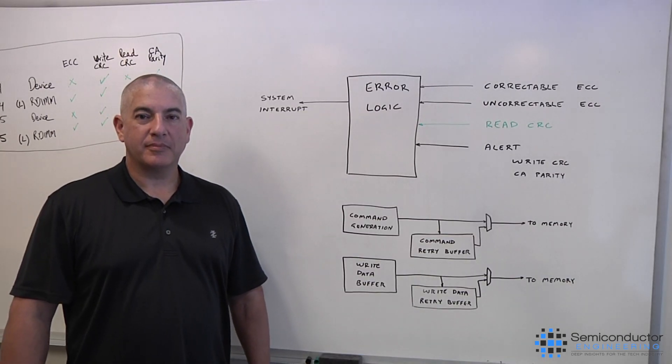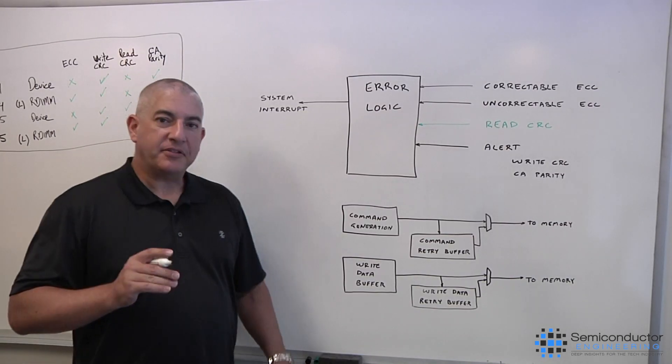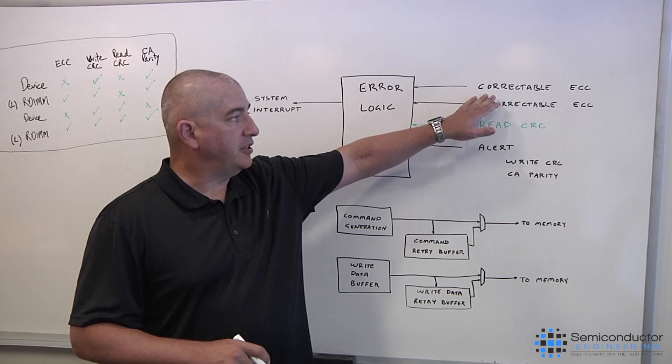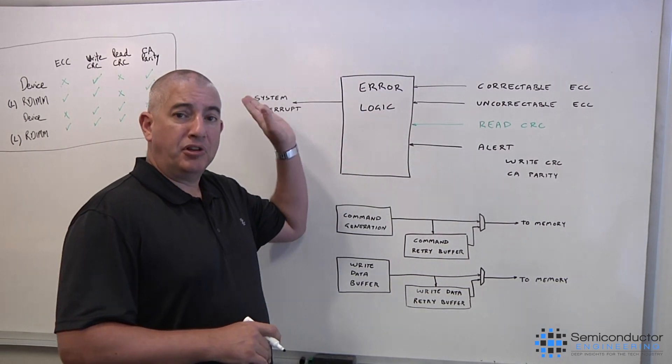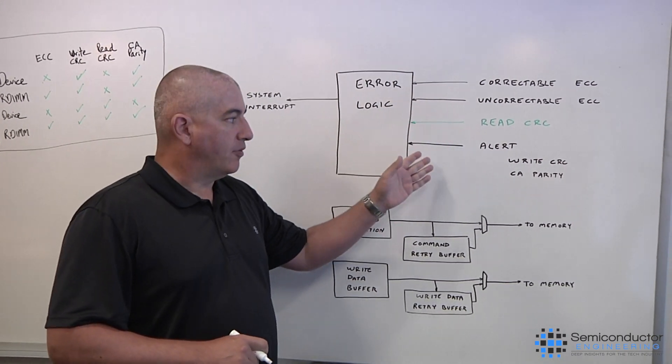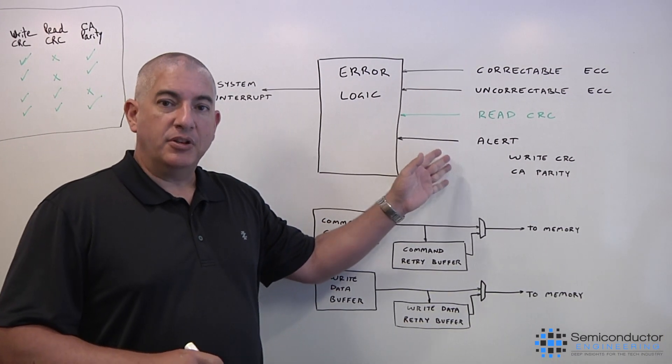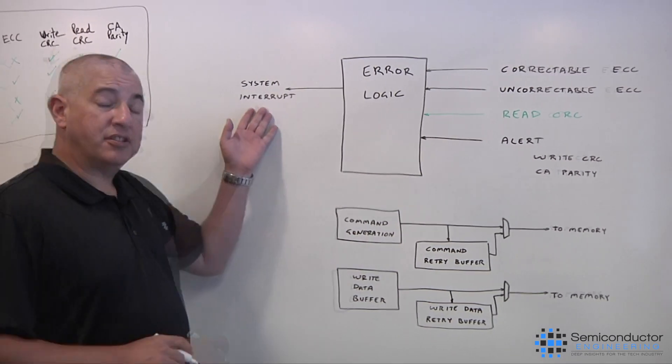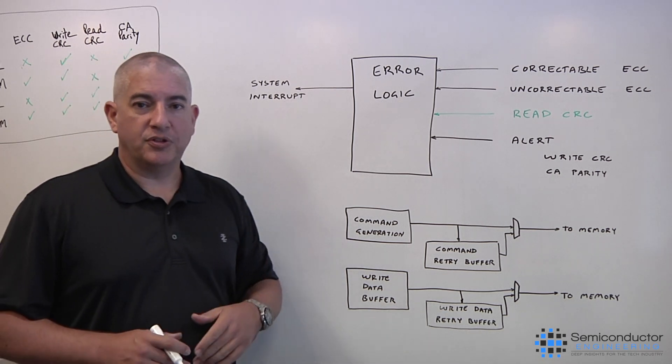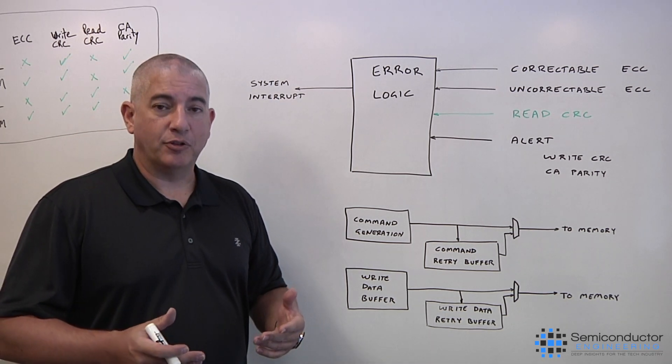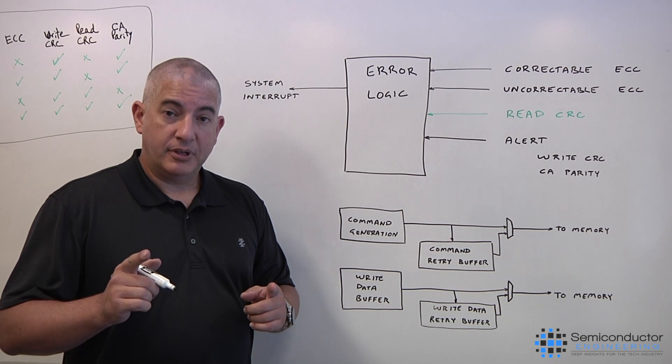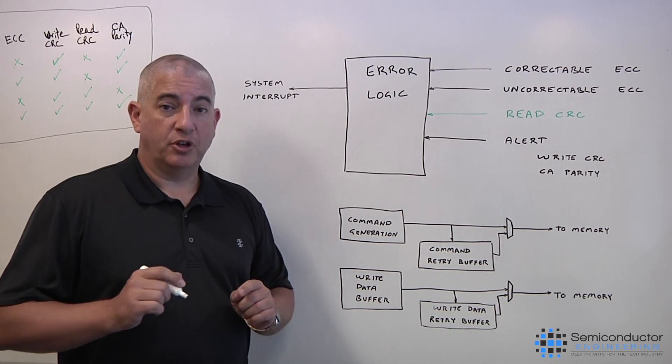So Brett, we've got the data, we've got the control. What happens when you have an error? A basic system can take all the different error sources and bring it into their error logic. Things like a correctable ECC, you can actually correct and send good data back to the system. But with uncorrectable ECC errors, read CRC errors, or if you have an alert problem, you need to take some kind of action. Again, a basic system, you can just send a system interrupt, but typically what that's going to do is result in the blue screen of death, and you're just going to have to replace components in the system, and you're going to have to bring the system offline almost immediately.